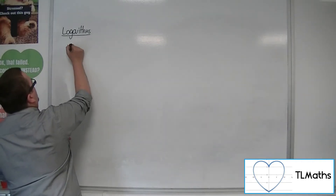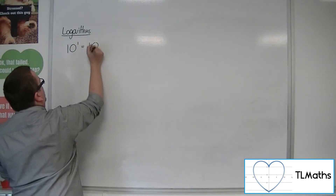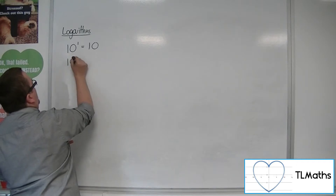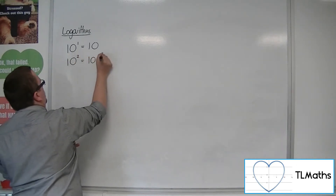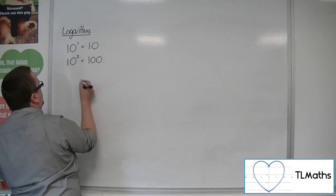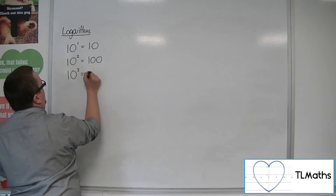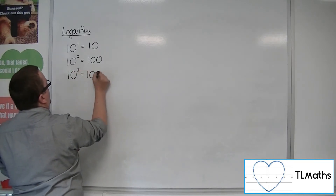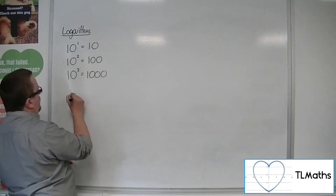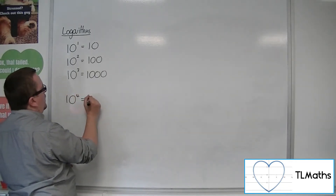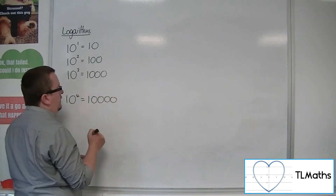We know, for example, that 10 to the 1 is 10. And we know that 10 to the 2 is 100. And so we could keep going: 10 cubed is equal to 1,000. And then 10 to the 4 will be 10,000.